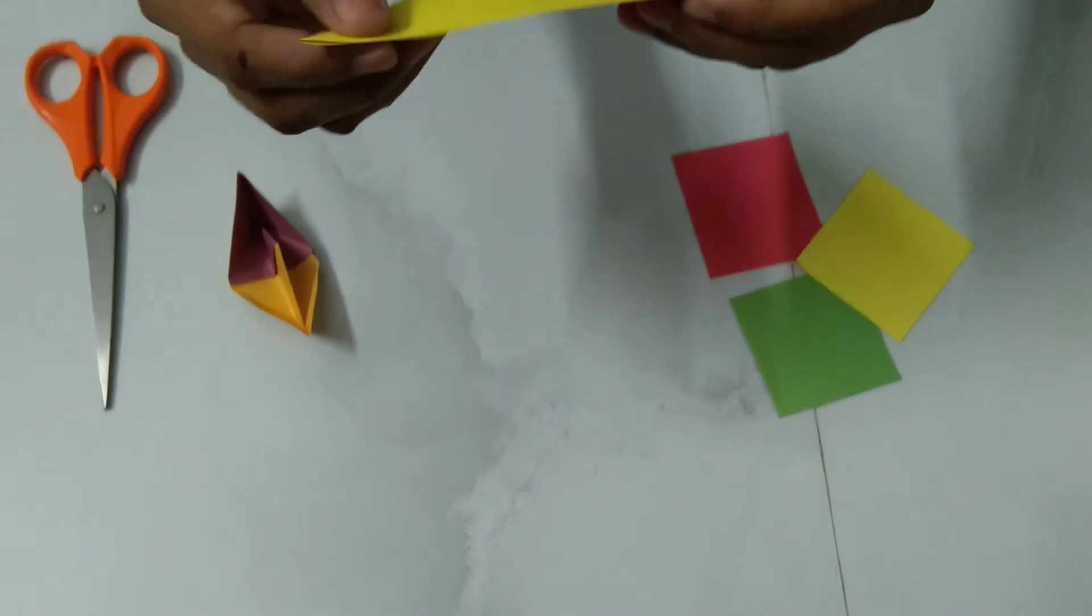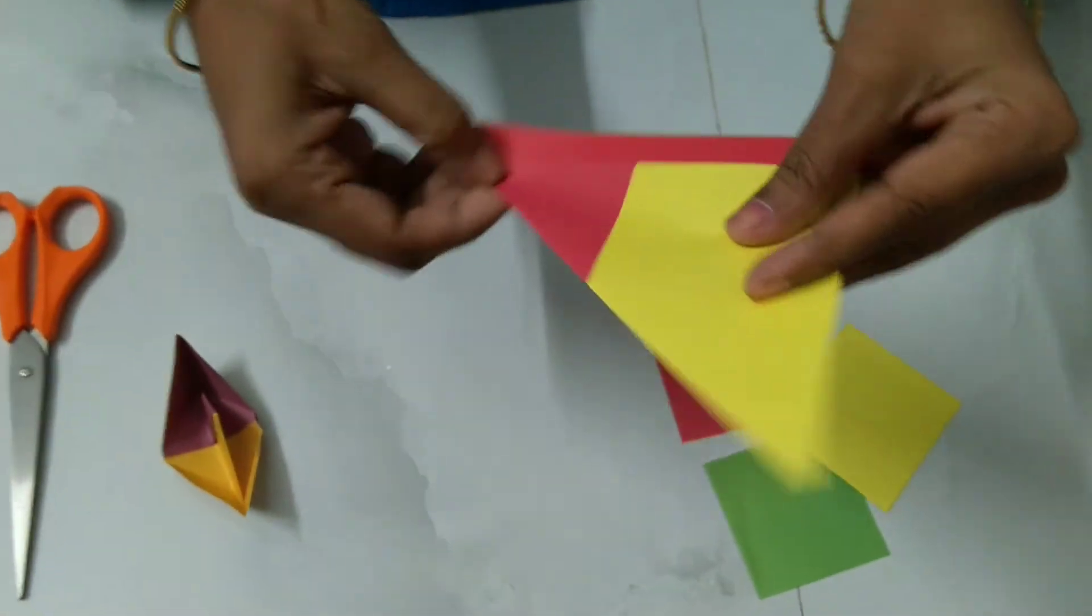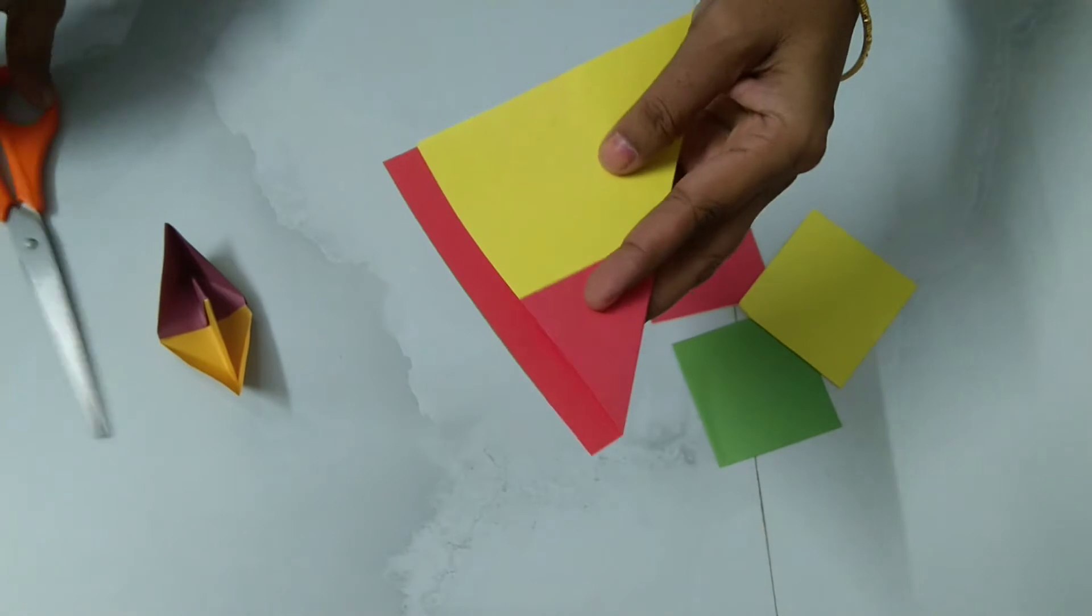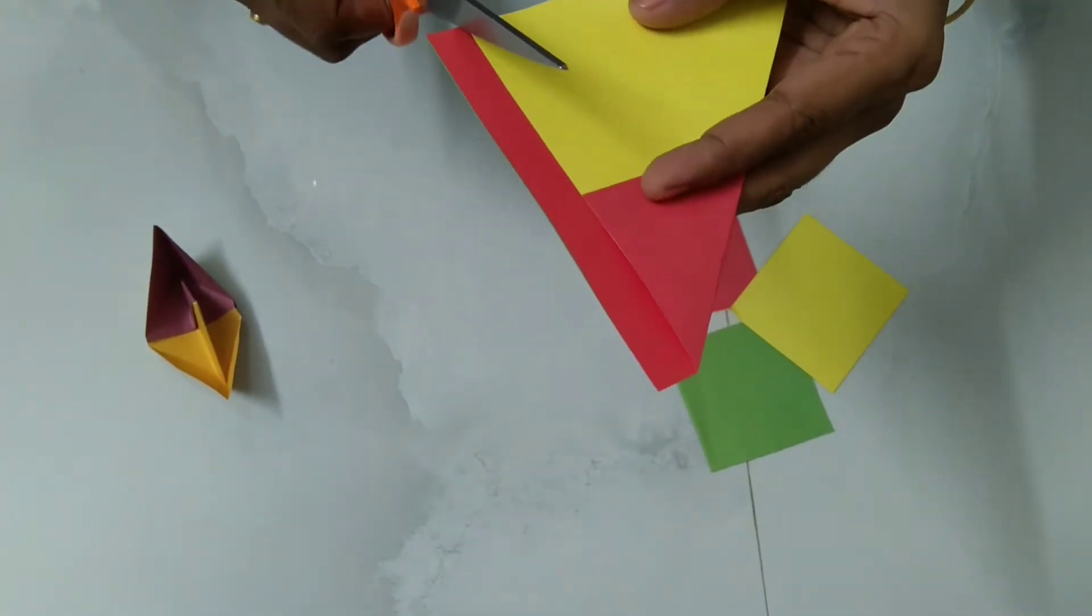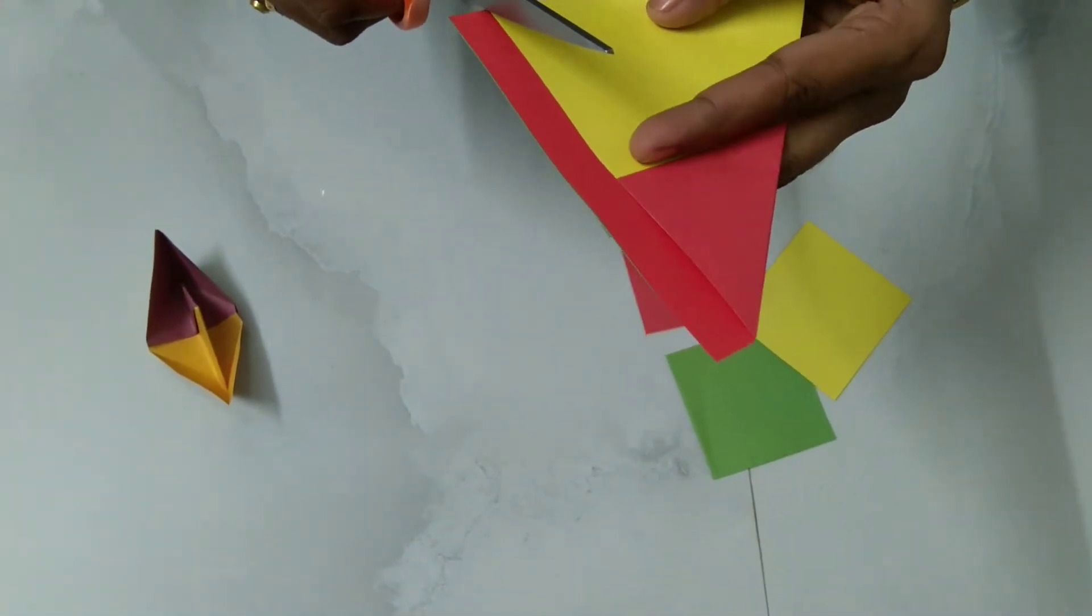So extra part you can see here, I will show you. After joining these two triangles, you can see some extra part that you have to cut from the paper.